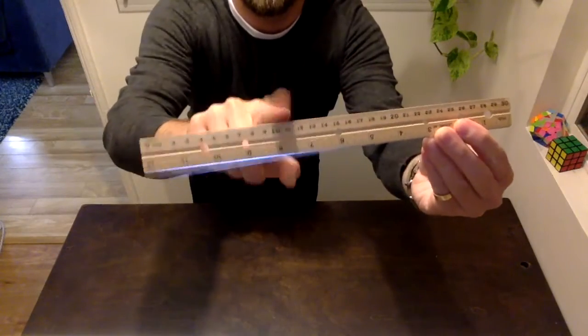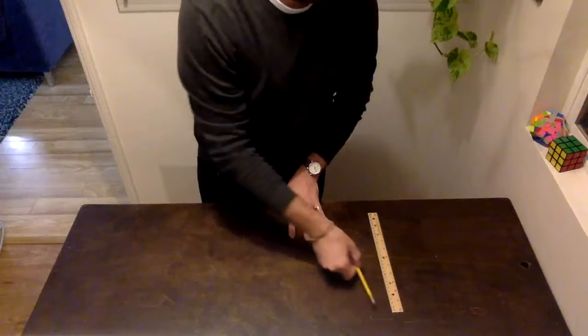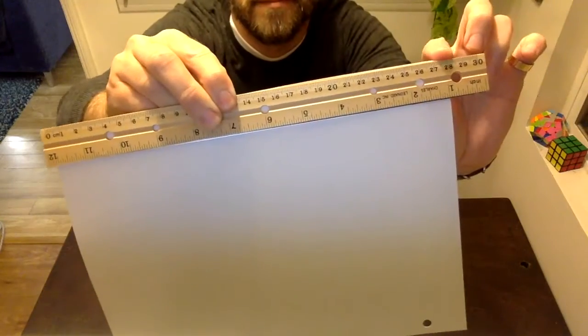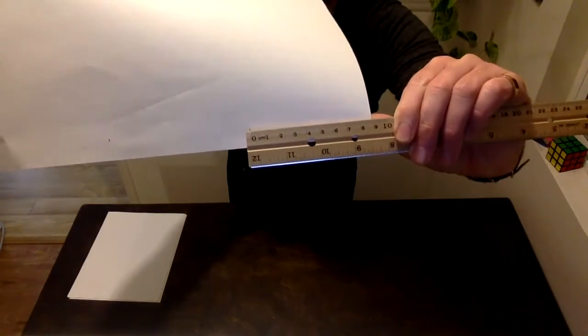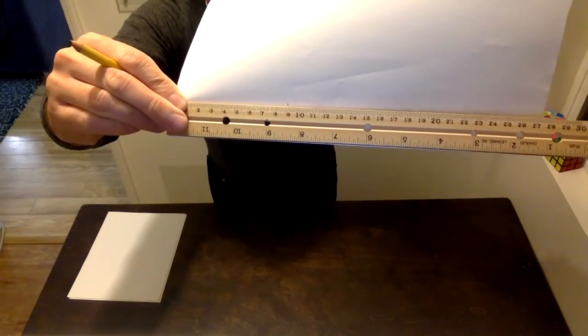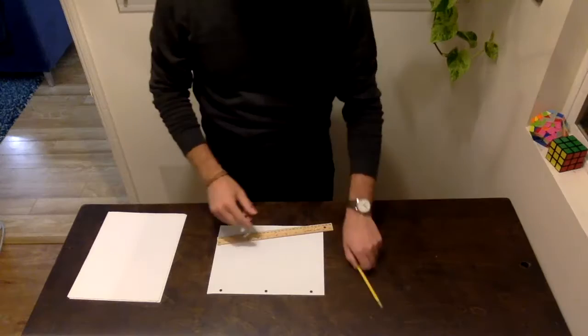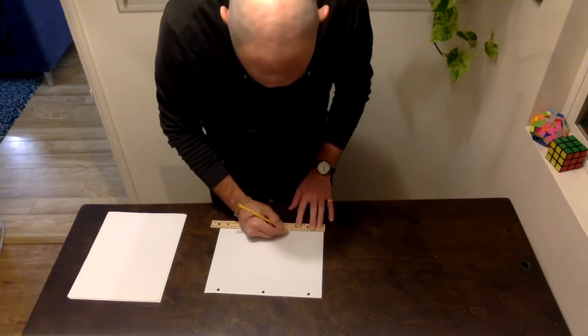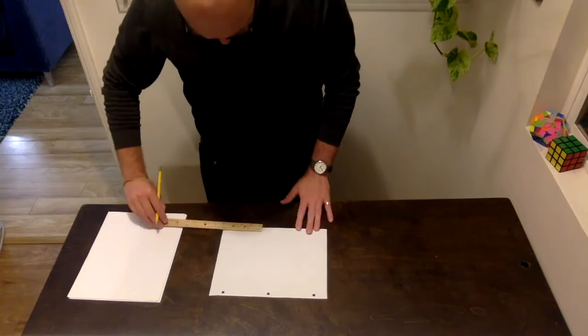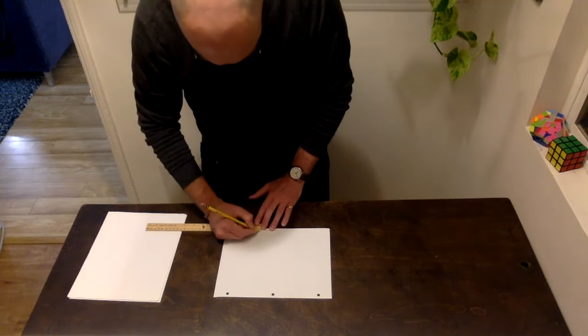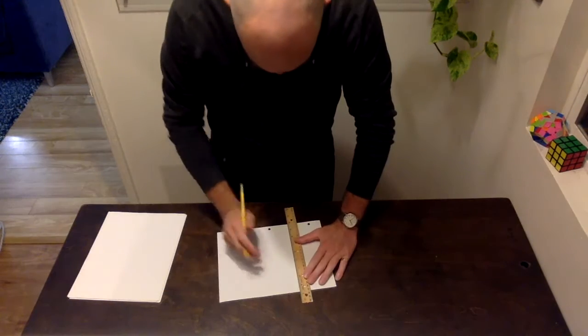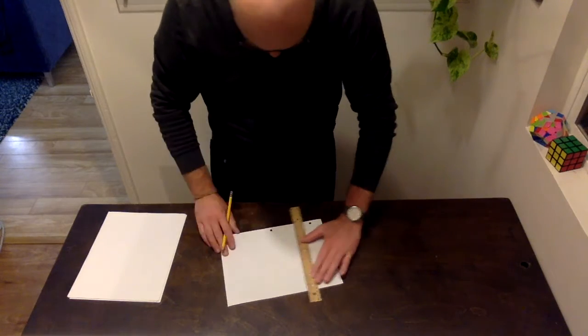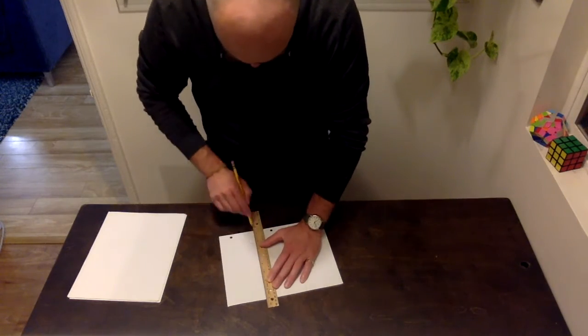Grab that ruler again, we're using the centimeter side and a pencil and your paper. A sheet of paper is 28 centimeters long. We're going to divide it into rough thirds, so we're gonna measure nine centimeters from each end, put a little tick mark with your pencil, and then draw a line across to connect those tick marks. And you've divided your piece of paper into rough thirds.